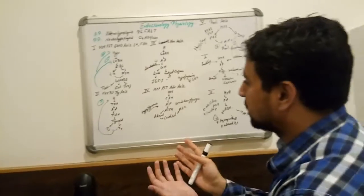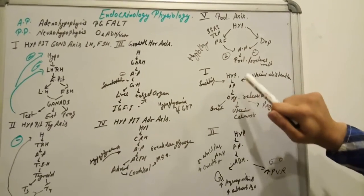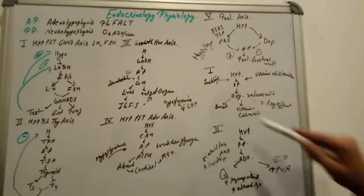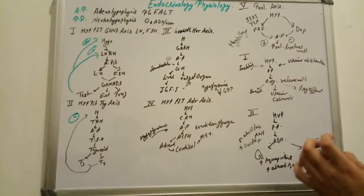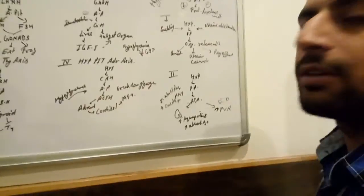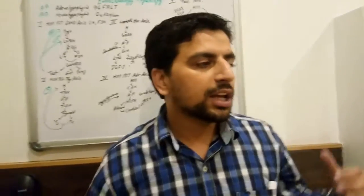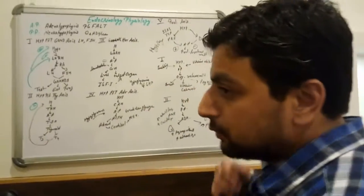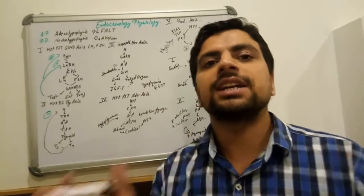For the posterior pituitary: oxytocin is released by suckling or by uterine distension. In the breast, oxytocin causes the release of milk — note that prolactin produces milk while oxytocin releases it. During breastfeeding when a mother feeds her child, in the uterus it causes uterine contraction, and in the cervix it causes dilatation. Its brand name is Syntocinon.